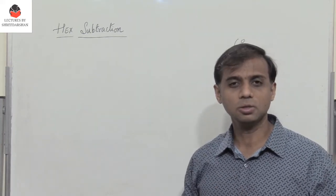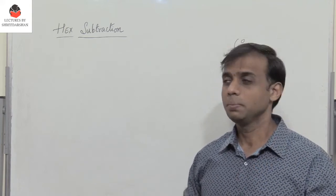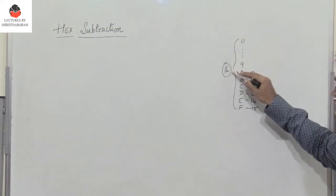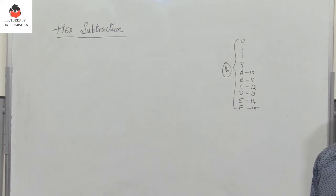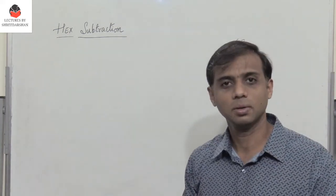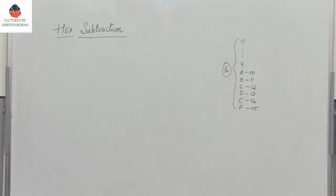If you remember in octal subtraction, when we had a borrow, we added 8 to the given number. But in hex, since you have 16 digits, 0 to 15, and the base is 16, we have to add 16 when we borrow 1. So let's go through hexadecimal subtraction by taking a few examples.